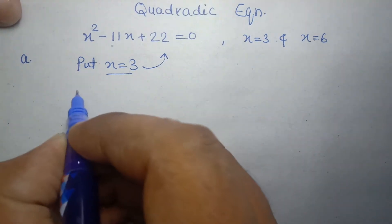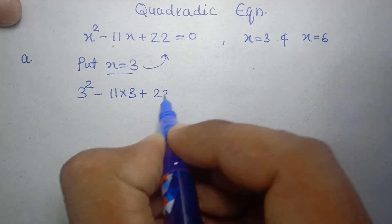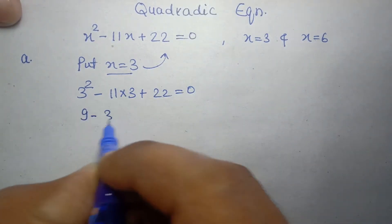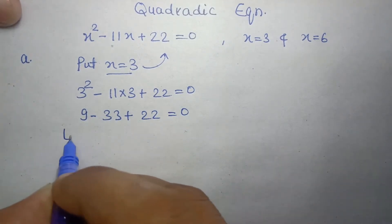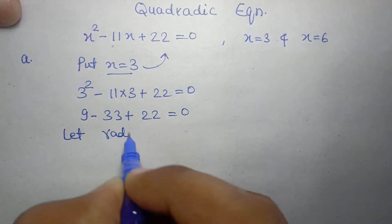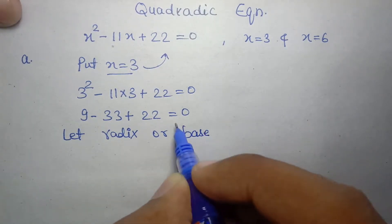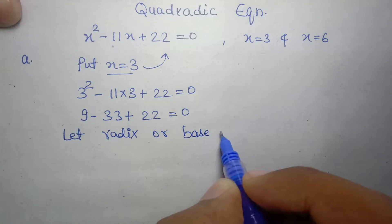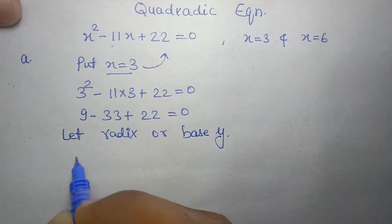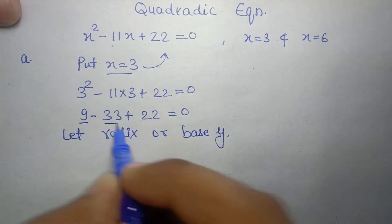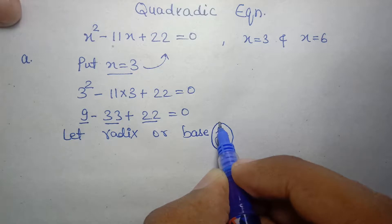Substituting x equals 3: 3 squared minus 11 into 3 plus 22 equals 0. Let the radix or base for the root x equals 3 be y. Now expand all three numbers — 9, 11, and 22 — assuming they have base y and convert them into decimal.